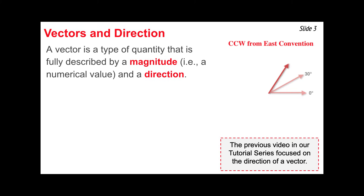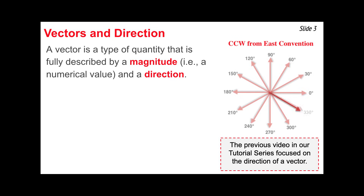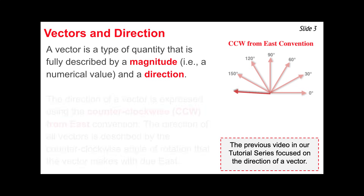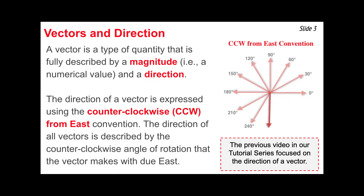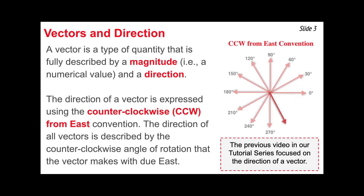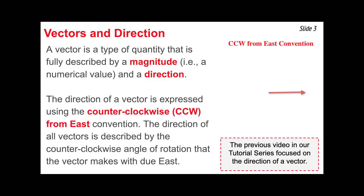A vector is a quantity that has both magnitude and direction. In a previous video, we focused on the topic of the direction of a vector. We talked about the counterclockwise from East convention for describing the direction of a vector that is not along one of the normal coordinate points of a compass. Using this convention, we express a vector's direction as an angle measured counterclockwise from East, so East is 0 degrees.